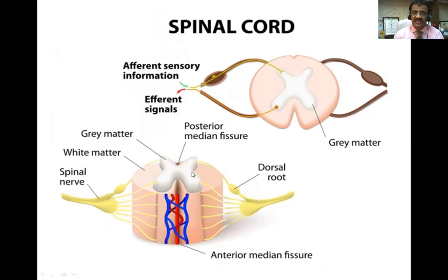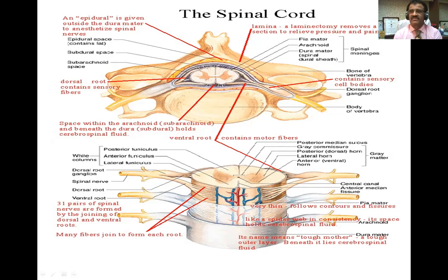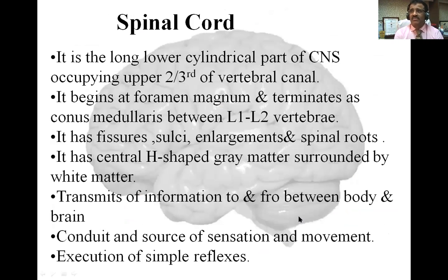Different diagrams make the structures easy to understand. The spinal cord has an anterior median fissure and a posterior median fissure. You can see the dorsal root of the spinal nerve. The spinal nerve is also covered by the same meninges which cover the brain — dura mater, arachnoid mater, and pia mater. You can see this H-shaped gray matter in the diagram.